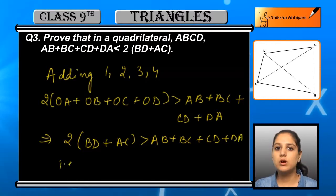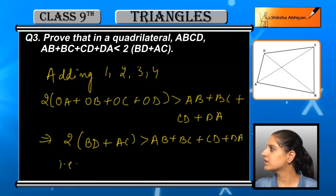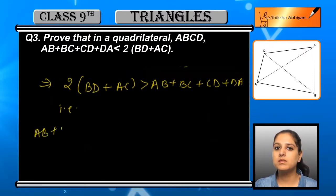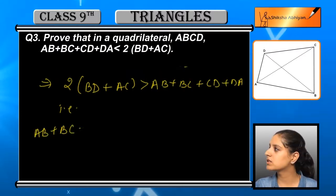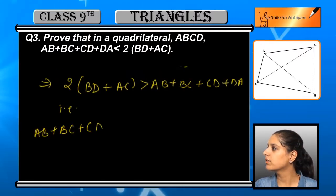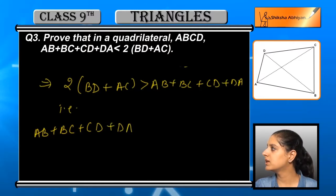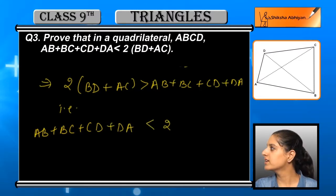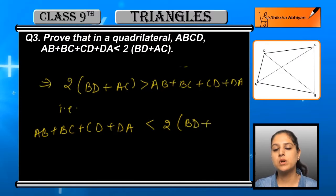Combining everything, we get AB plus BC plus CD plus DA is less than twice of BD plus AC. This is what we were supposed to prove.